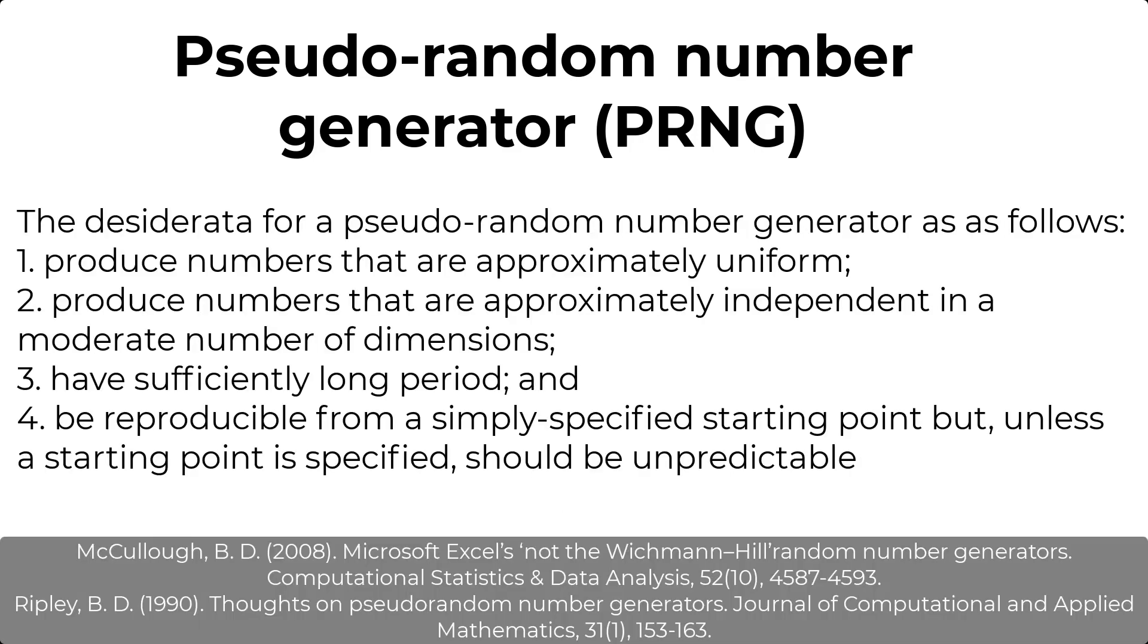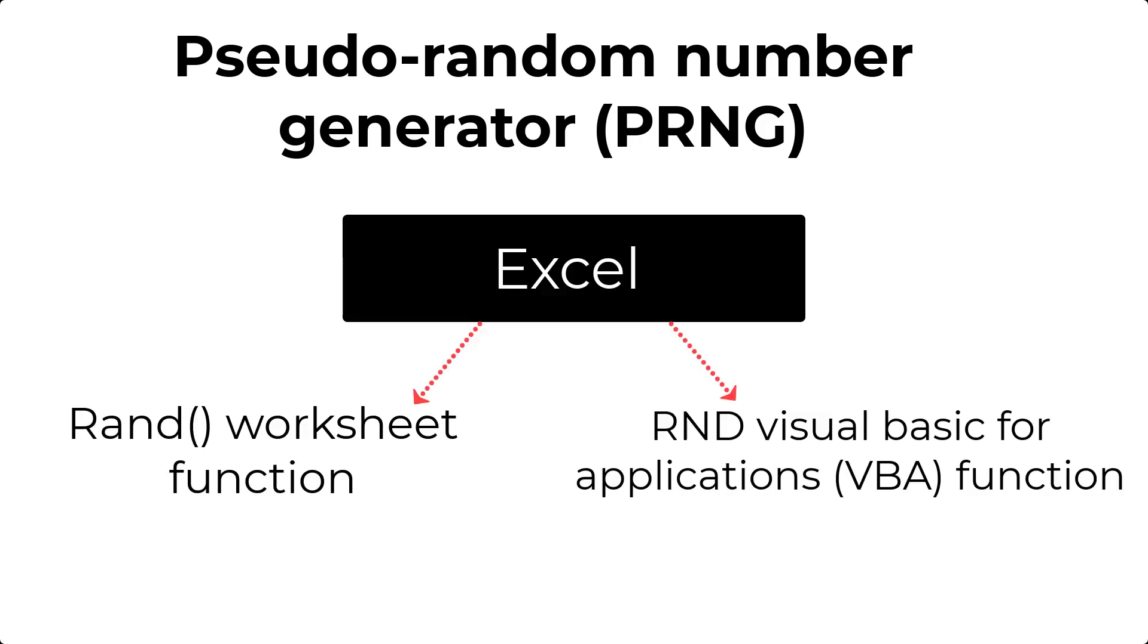The logic and theory behind the pseudo-random number generator can be quite complicated. Luckily, we don't need to think too much about it, as Excel has two different functions which can implement this for us. One is the worksheet function called RAND, and the other one is the VBA function RND. And the pseudo-random number generator in Excel is allegedly, according to Microsoft at least, based on the Wichmann Hill algorithm.